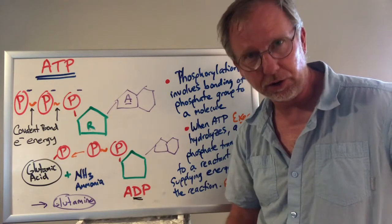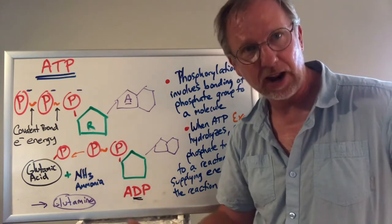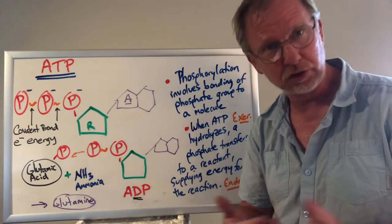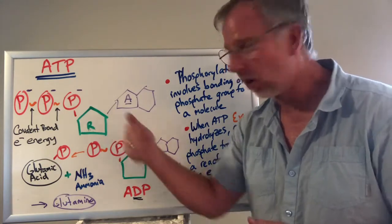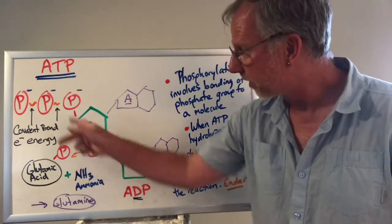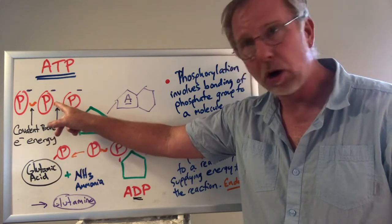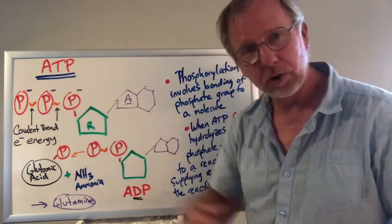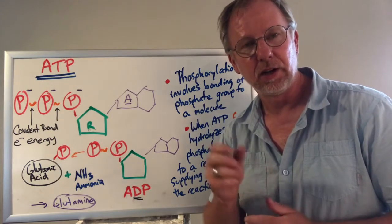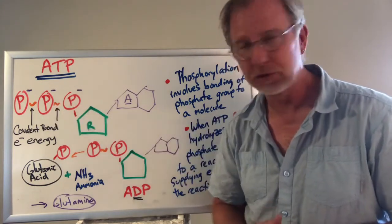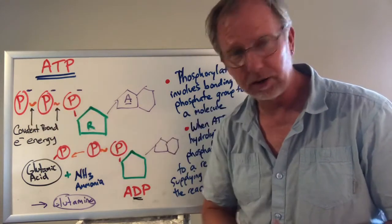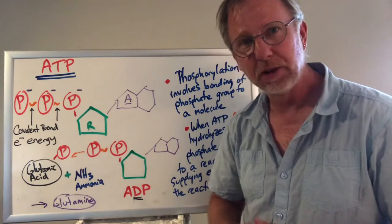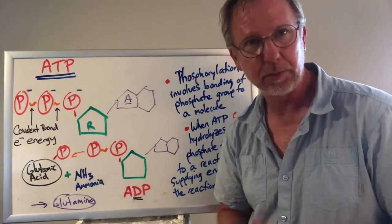Adenosine triphosphate is the energy molecule that cells on Earth use for endergonic reactions — reactions that require an input of energy to occur. Where is the energy located in this molecule? It's here in the covalent bonds between the phosphate groups. A covalent bond involves two electrons being shared between atoms, and those electrons are full of energy — that's what cells are tapping into when they use ATP.